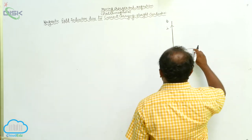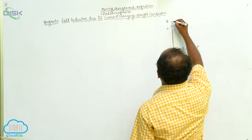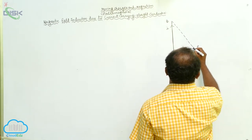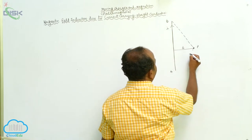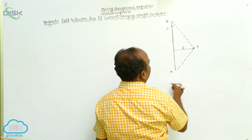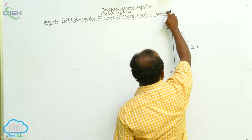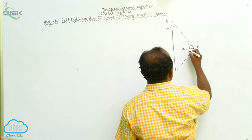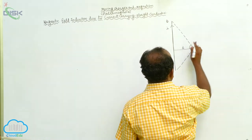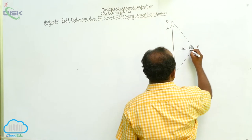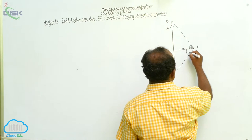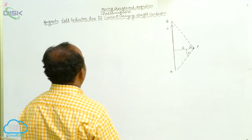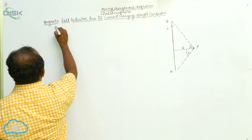Join the point B from the top end and the bottom end of the conductor. The top end makes an angle alpha, and the bottom end makes an angle beta, with respect to the perpendicular. Therefore, this angle is called alpha and this angle is called beta. By using Biot-Savart's Law, we now proceed to calculate the magnetic field.